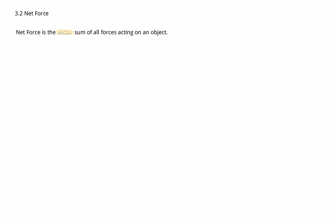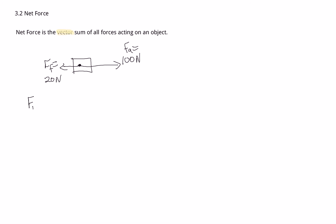Let's do an easy example. We have an object drawn as a box, getting pushed forward with 100 newtons to the right, and a force of friction going backwards at 20 newtons. So our applied force is 100 and our force of friction is 20. What would the net force be? We calculate the net force by adding all forces: 100 to the right is positive, 20 to the left is negative, so 100 plus negative 20 gives us 80 newtons to the right.